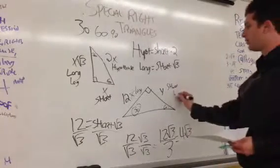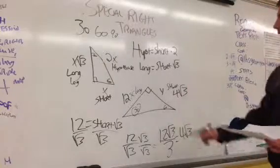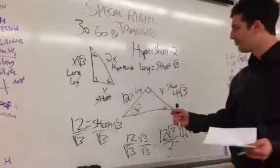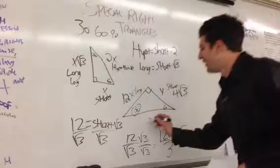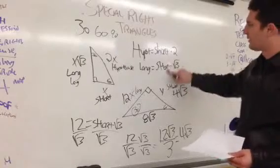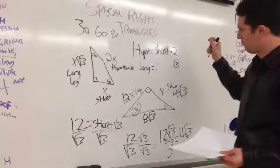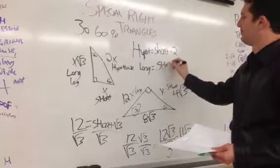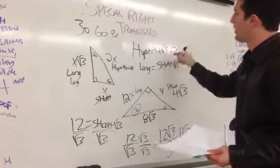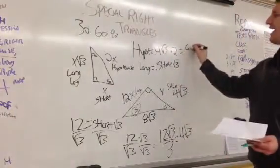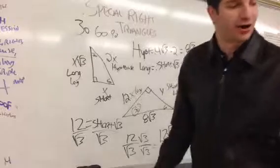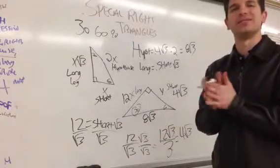Now how do I find my hypotenuse? My hypotenuse is nothing more than my short leg times 2. So 4 square root 3 times 2 is 8 square root 3. So I plugged it in: 4 square root 3 times 2 equals 8 square root 3. And there we go. To check if all of this is correct, you can always use the Pythagorean Theorem.